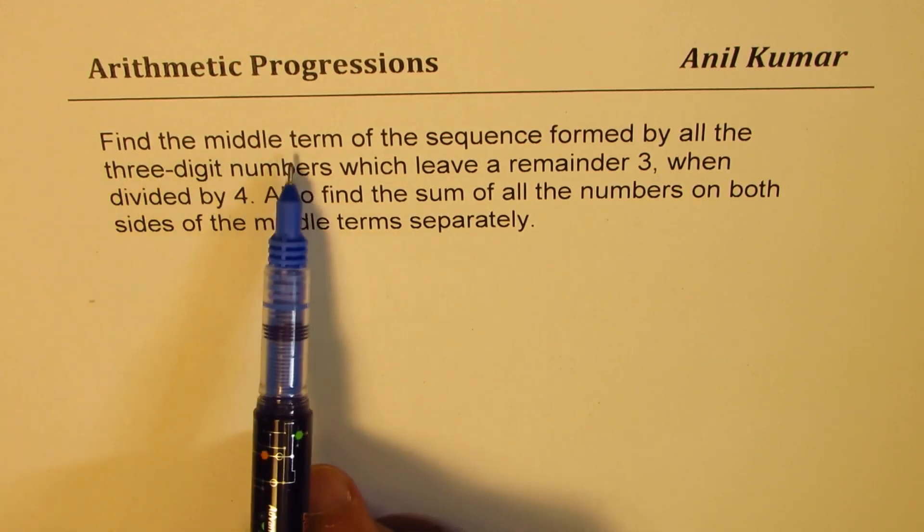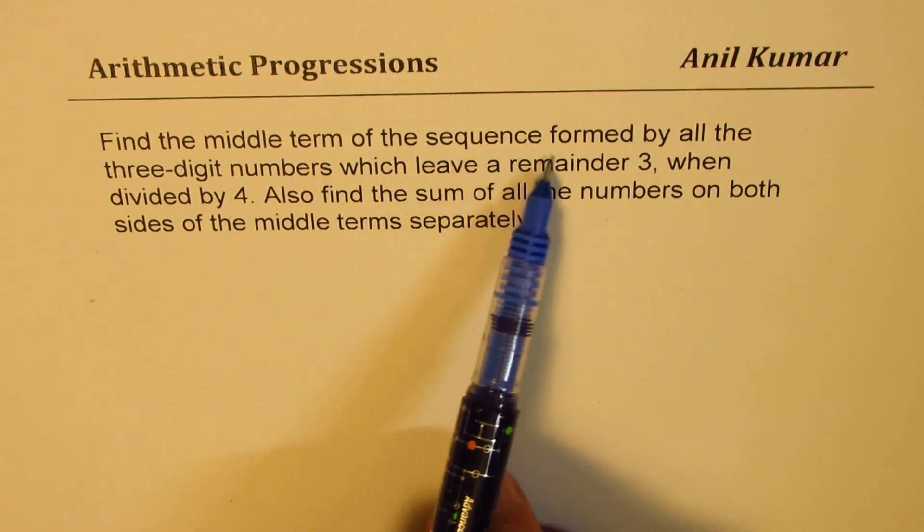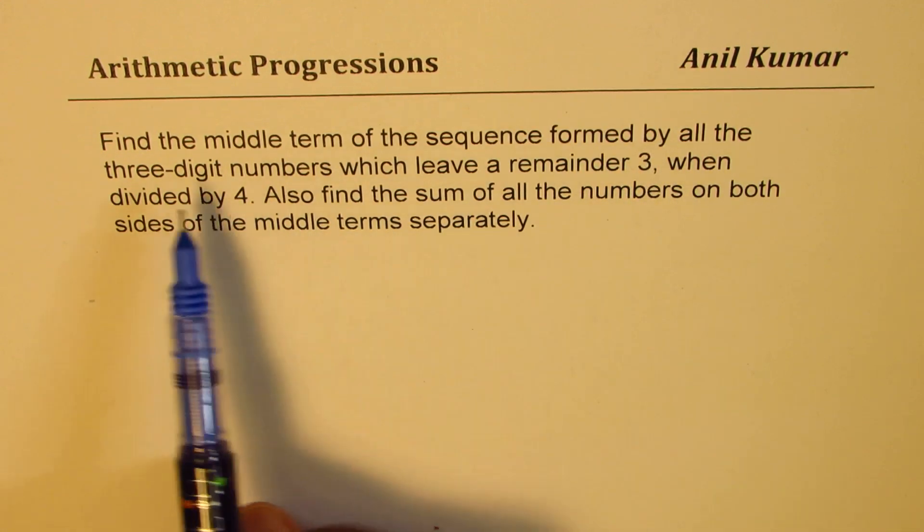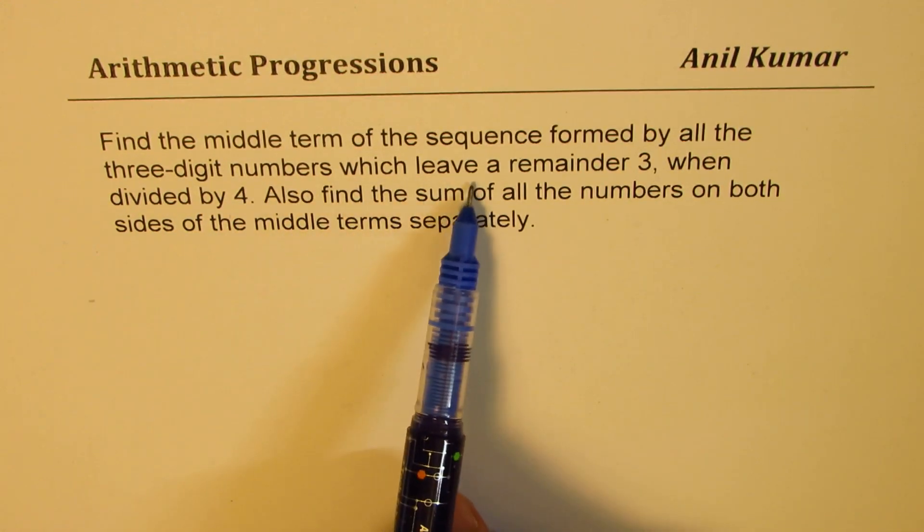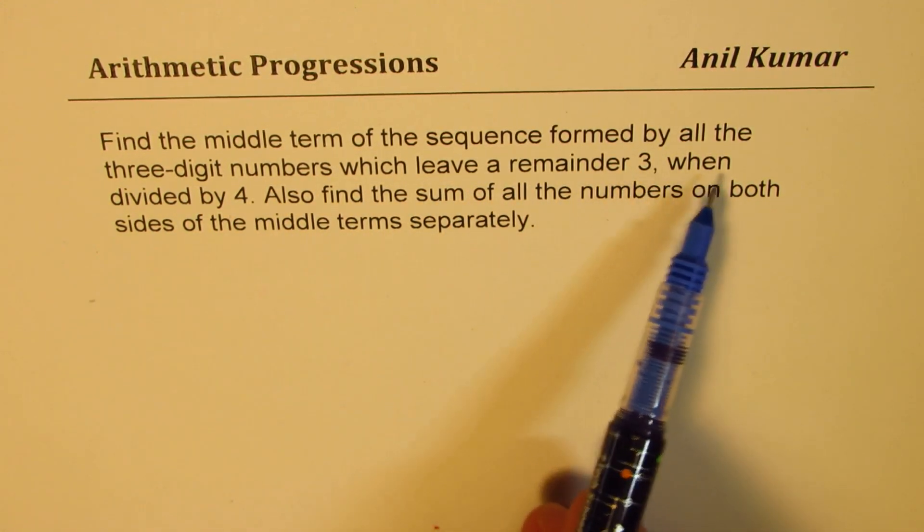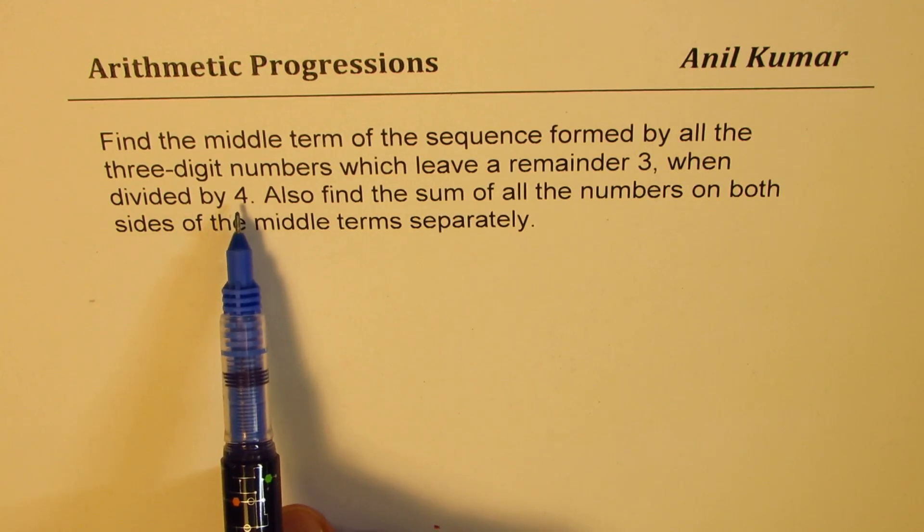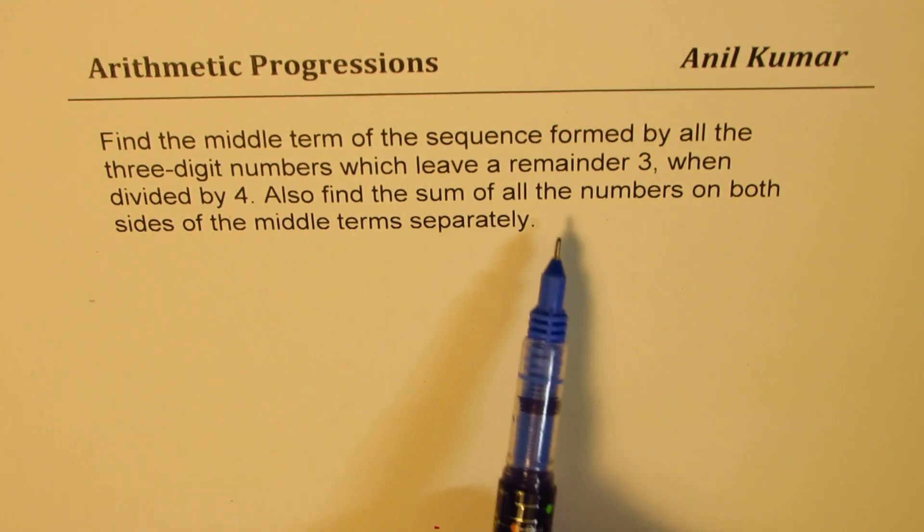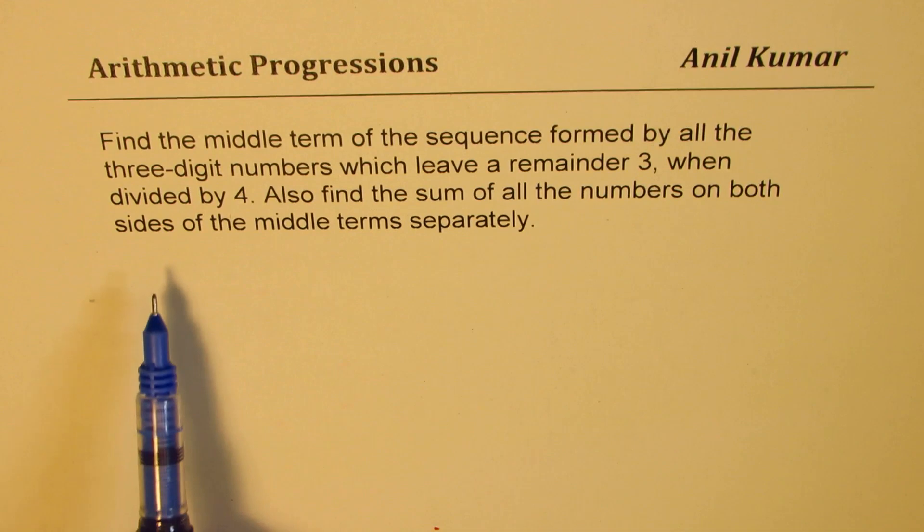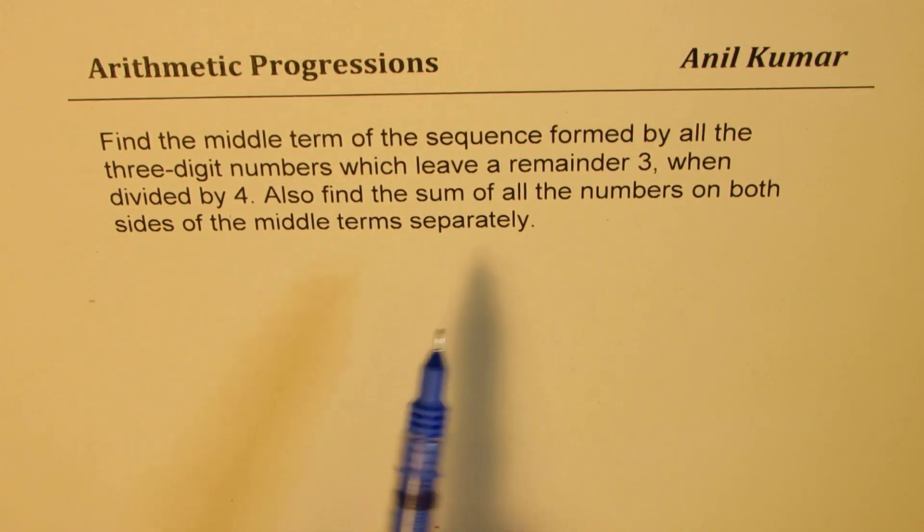The question here is, find the middle term of the sequence formed by all the three-digit numbers which leave a remainder 3 when divided by 4. Also, find the sum of all the numbers on both sides of the middle terms separately.